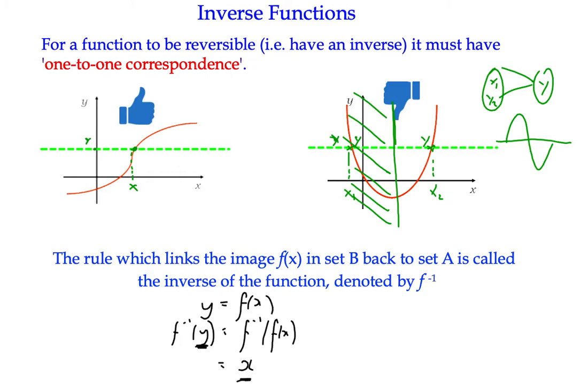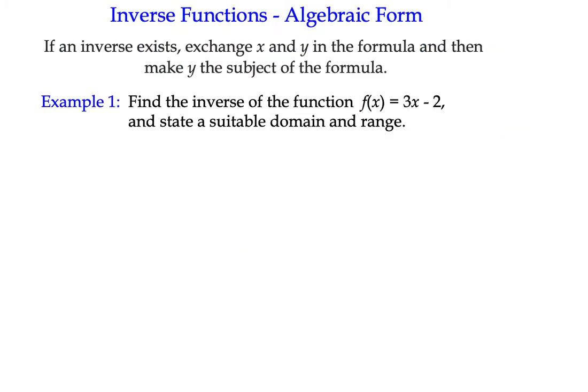So there are two ways in which we can study the inverse of a function, two ways we can generate it. One of them is a graphical way, and one of them is algebraic. So the first way we're going to look at it is an algebraic form. There's a process that we can use, and what we do is we take the function, we swap around the two x and y variables, and then rearrange it for y again. So in example one, find the inverse of the function f(x) = 3x - 2, and we're going to have a look at a suitable domain and range. So I'm going to rewrite f(x) just with a y for the moment. It makes it a little bit easier to work with. We've got y = 3x - 2. That's a straight line.